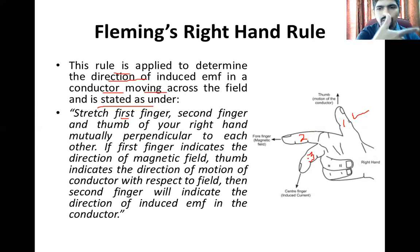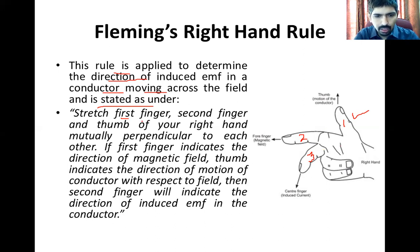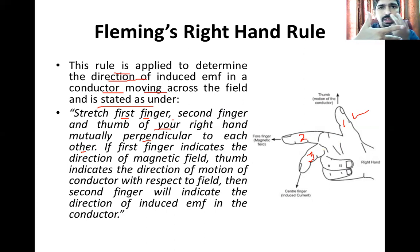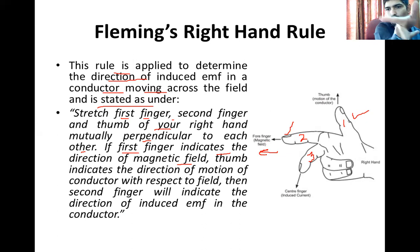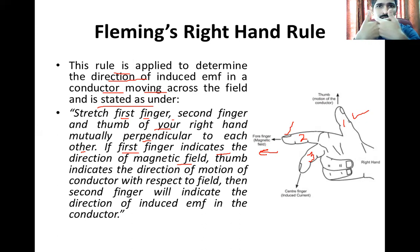They should be facing the same way, as shown in the diagram. Stretch the first finger, second finger, and thumb of your right hand so they are mutually perpendicular to each other — 90 degrees — and facing in front of your face. The first finger indicates the direction of the magnetic field.